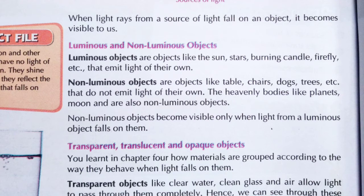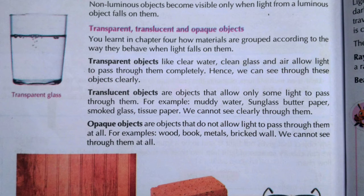How do we see non-luminous objects? When light from a source falls on that object, it becomes visible to us. When light hits the object and reflects back to our eyes, then we can see those objects. Objects can also be grouped based on how they behave when light falls on them - whether they pass light completely, partially, or not at all.